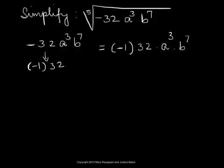Now negative 1 raised to any odd power gives negative 1. So we write negative 1 as negative 1 to the power of 5.